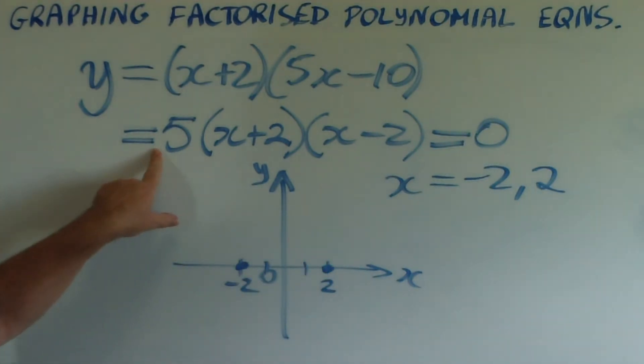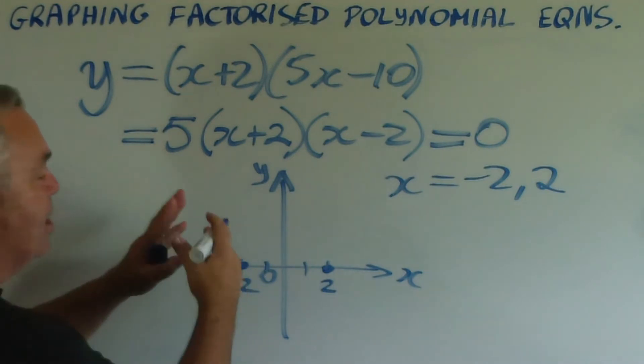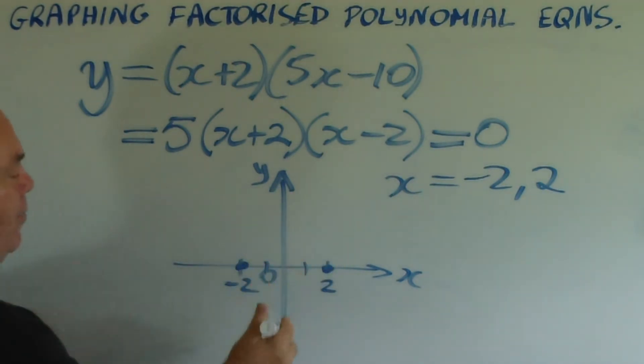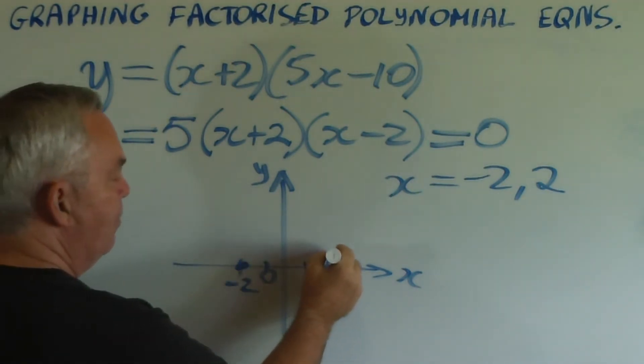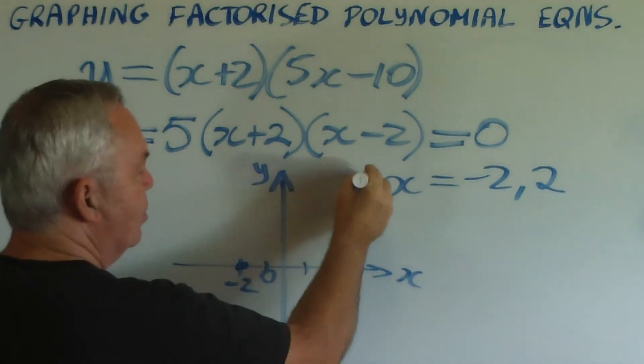Notice there's no minus sign. So we know that as the x values get large, the y values get quite large as well. So we know the graph goes this way.